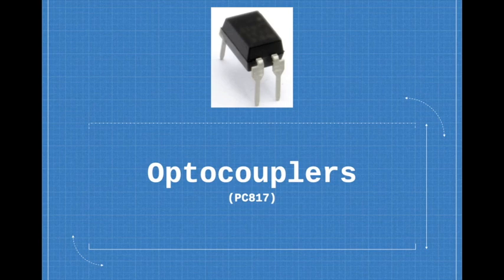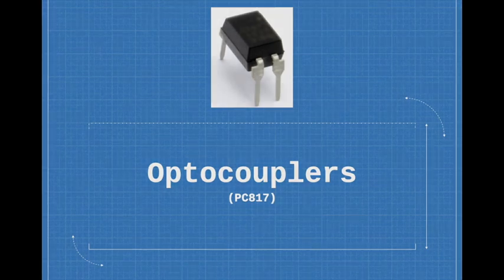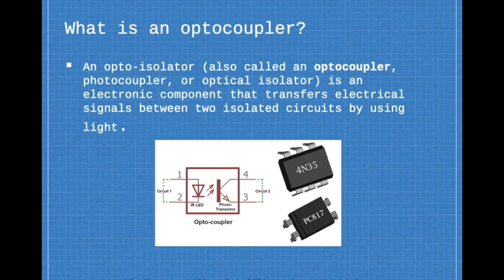Okay guys, so now we'll be discussing what an optocoupler is. In particular, we'll be using the 4 pin PC817 optocoupler. An optocoupler, also known as an opto-insulator, is an electronic component that transfers electrical signals between two isolated circuits by using light. So in this figure you can see that there is an IR LED which is not connected to this photo transistor.